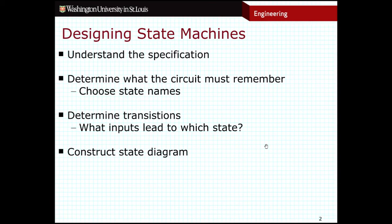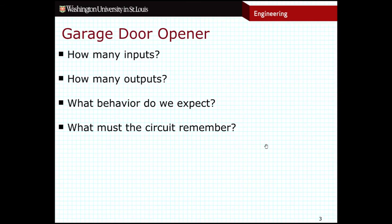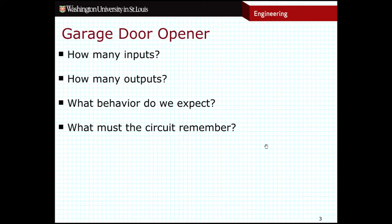I'd like to try an example. The example state machine I would like to create has to do with a garage door opener. Most of us have had access to garage door openers — usually there is one button. I click the button and the garage door goes up if it's closed, or if it's open, the garage door will go down. Most garage doors have a sensor at the bottom such that if the garage door is closing and something gets in the way, it will reverse direction — we don't want to close on a person or a car. So there is some kind of an obstruction detection mechanism.